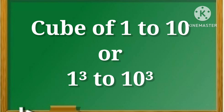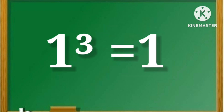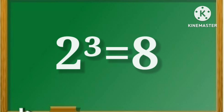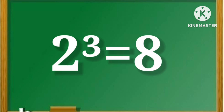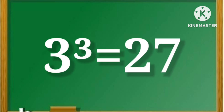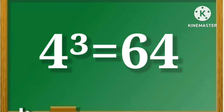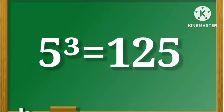So let's start. 1 cube is equal to 1. 2 cube is equal to 8. 3 cube is equal to 27. 4 cube is equal to 64. 5 cube is equal to 125.